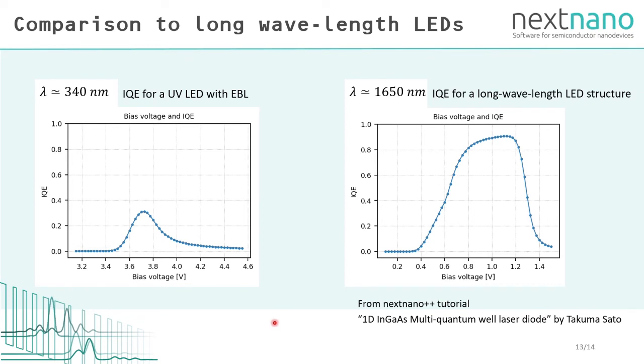Another interesting observation would be the comparison to long wavelength LED structures. The right graph shows the bias voltage and IQE for a similar LED structure but for a wavelength of 450 nm. We can see that the bias range where the IQE holds the peak value is around 0.4 eV in this long wavelength LED structure. However, in our UV LED structure here, the peak is much steeper and its range is less than 0.1 eV. Thus, it would be an interesting question, how we can increase the stability of the peak in IQE for UV LEDs.